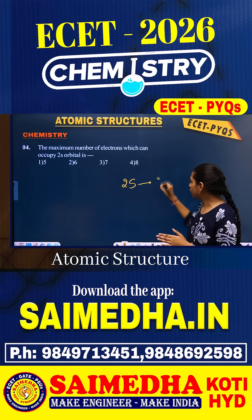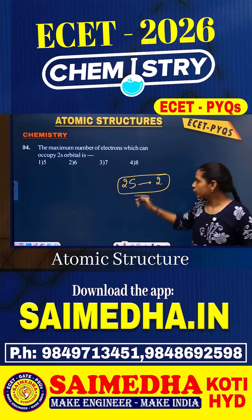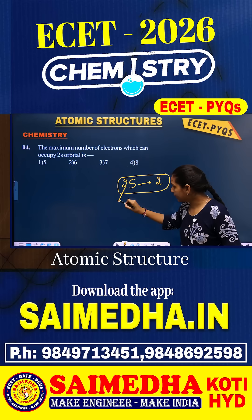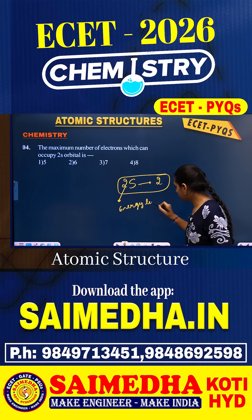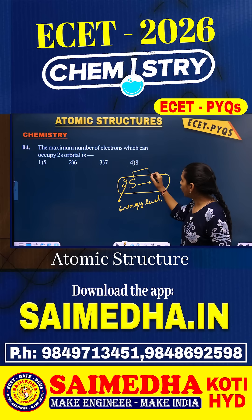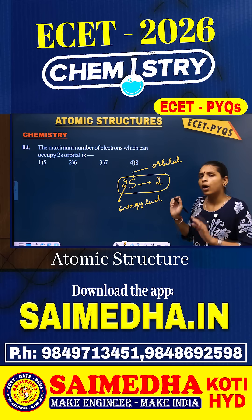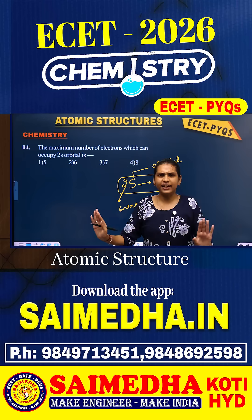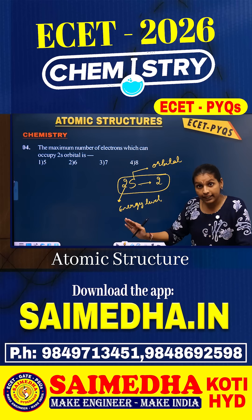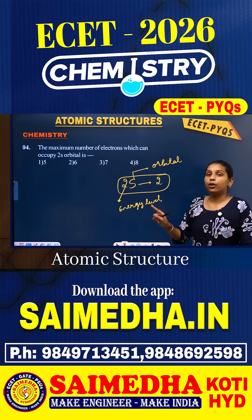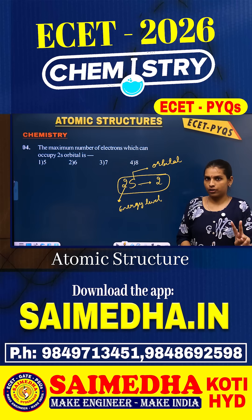Simply, the answer is 2. So this is nothing but the energy level, and this is the orbital. Whatever the energy level — 3, 4, 5, 6 — the s orbital has a capacity to hold only 2 electrons.